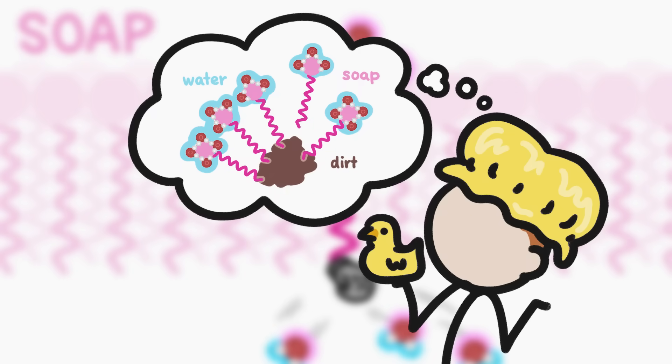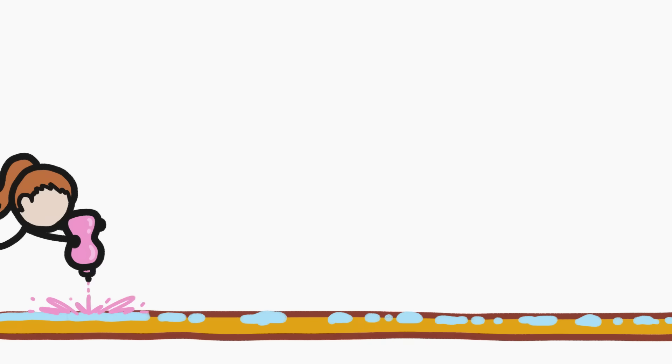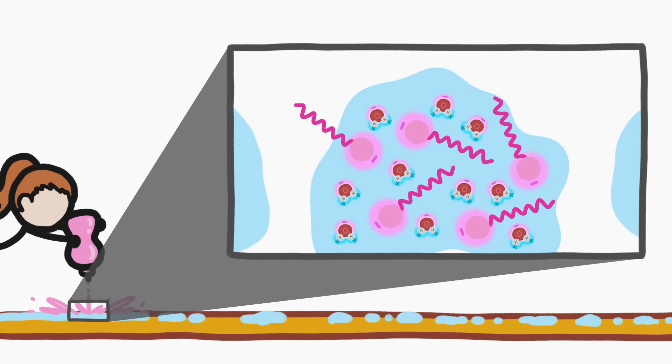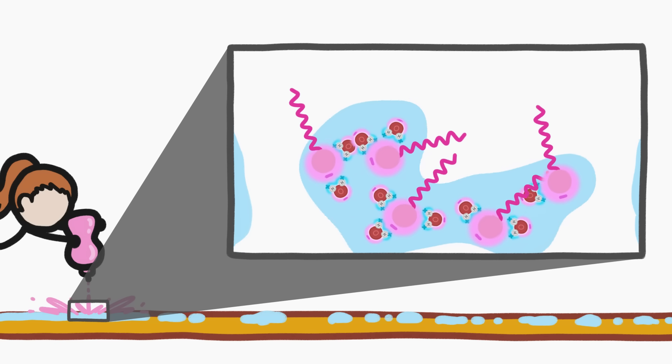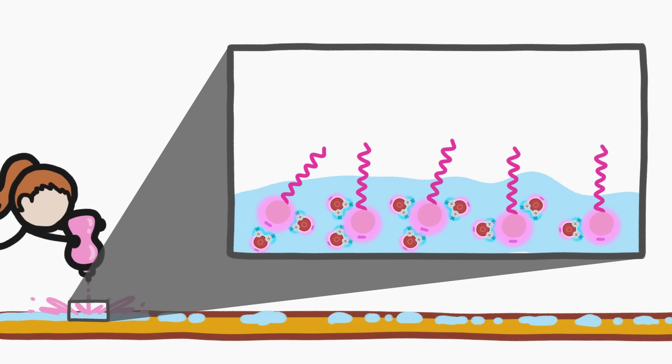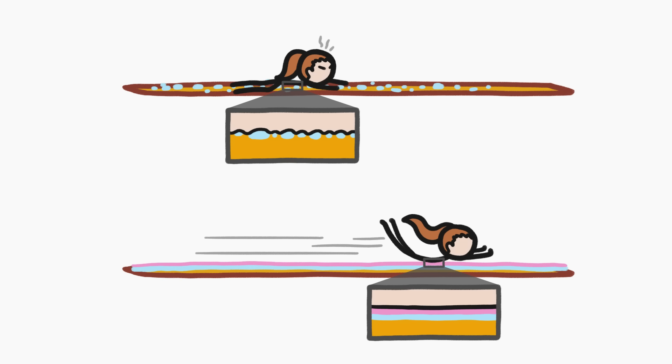Which is also why soap cleans stuff so well, but that is a video for another day. Anyway, when you add soap to water, its water-loving ends link up with the water molecules. But the other ends, which just want out of the whole situation, drag the entire assembly toward the surface. Soap basically forces the water to spread out rather than bead up, which results in a much slippier slide.